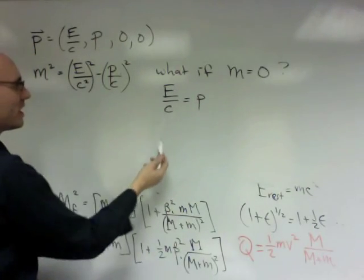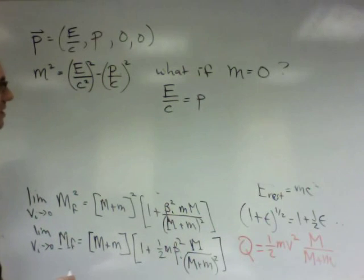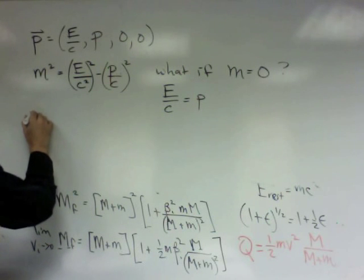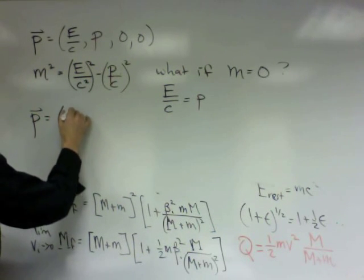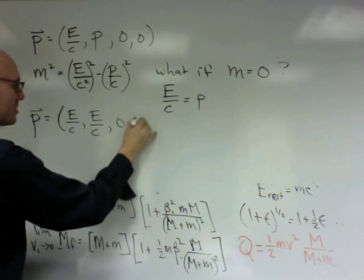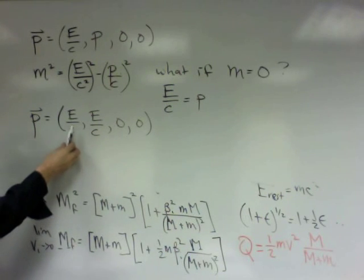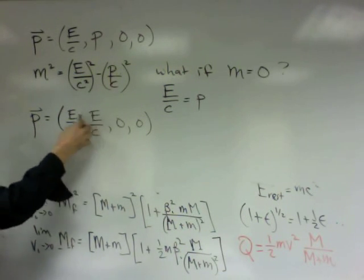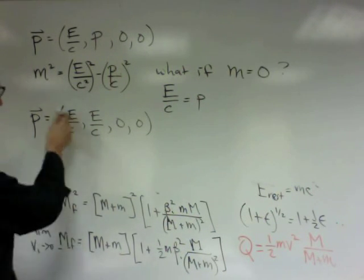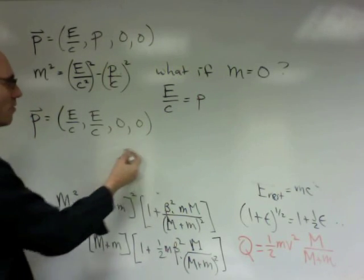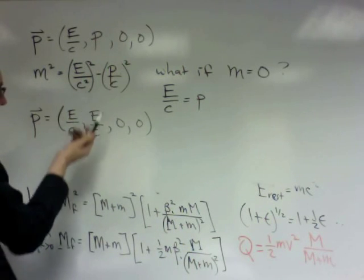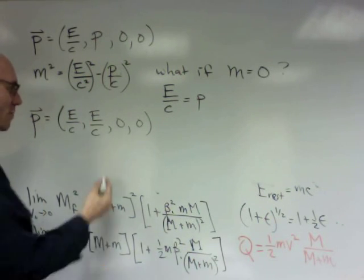Now, if I have that situation, then my four-vector looks like E over C, E over C, zero, zero. Okay, so this is a four-momentum I've written down where I've set the momentum component equal to the energy component, or the x component equal to the time component. Well, what properties does an object like this have? Well, first of all, the mass is zero, because if I take this squared and subtract this squared, obviously I get zero, so this has no mass, but there's another thing.